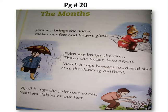January brings the snow, makes our feet and fingers glow. February brings the rain, thaws the frozen lake again. March brings breezes loud and shrill, stirs the dancing daffodil. April brings the primrose sweet, scatters daisies at our feet.